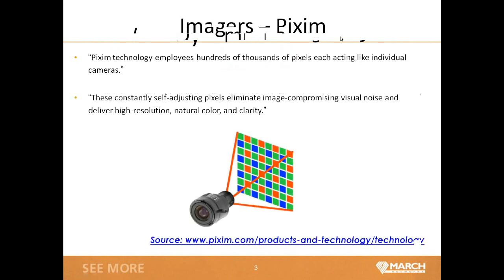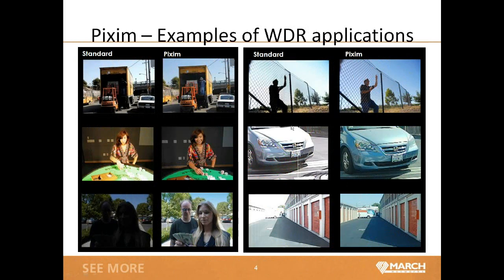The typical dynamic range for a sensor is plus or minus 60 dB, and most WDR cameras are normally around 100 decibels. The PIXM chips work very differently to normal chipsets because they're based on a CMOS sensor rather than the traditional CCD sensor. Most CCTV cameras are based on the CCD sensor, which can only adjust light for the whole chip. With the PIXM camera, each individual pixel acts as an individual camera and can adjust the light for each pixel individually. These constantly self-adjusting pixels eliminate image-compromising visual noise and deliver high resolution, natural colour and clarity. For more information on PIXM technology, visit the website shown on the slide.